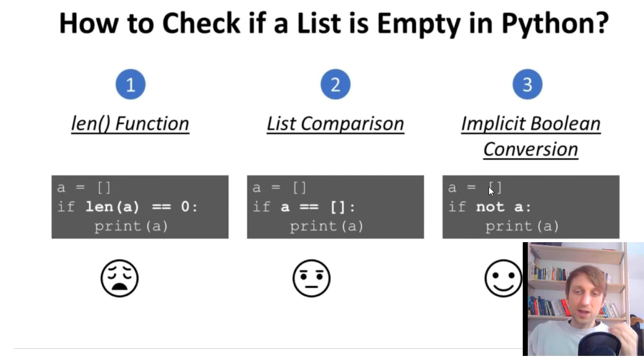So if a contains at least one element, the operation not a - the a will be converted to a Boolean true value because it contains at least one element. If you have not a, it is false. So if there is an element, this would return false and you wouldn't go into this if body. But if it contains no element at all, it is converted to Boolean false, and you check not a, so not false is true. Therefore you would go into the if body. This is the most Pythonic way.